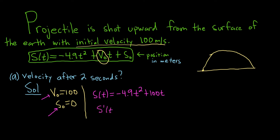So S′(t) — the derivative — is 2 times negative 4.9, which gives negative 9.8t, and the derivative of 100t is just 100. So this is V(t), the velocity function. This is the velocity at t seconds — the instantaneous rate of change, or instantaneous velocity.